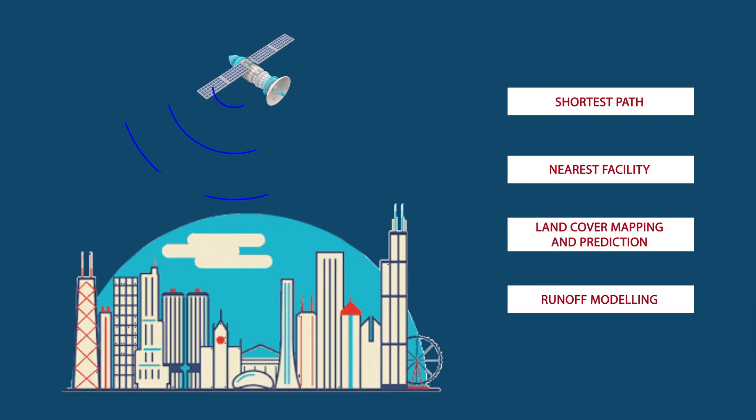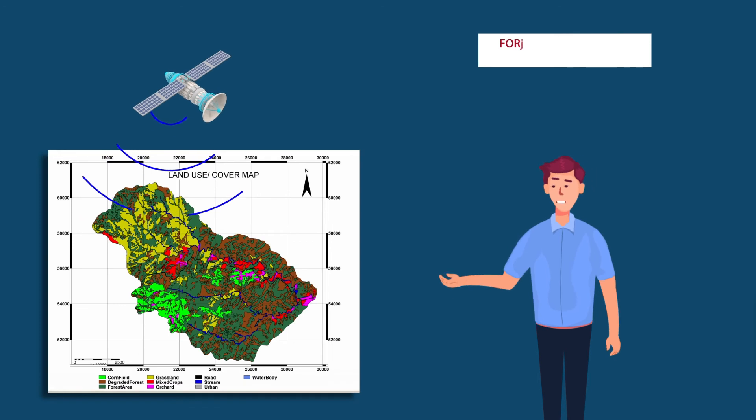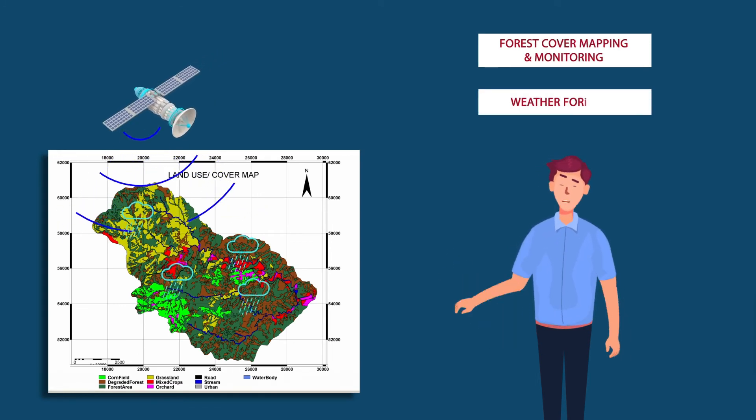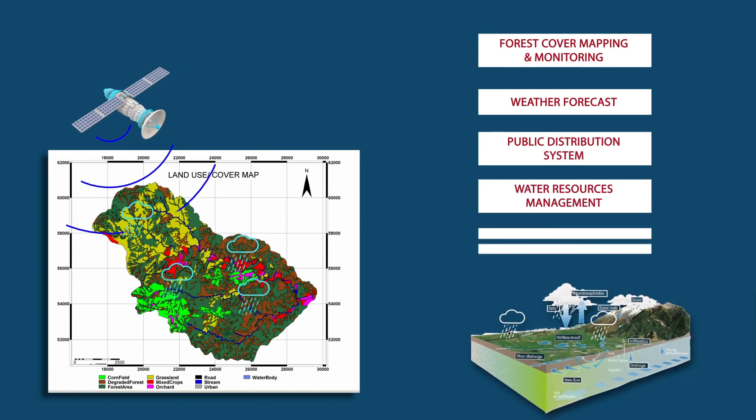Water runoff modeling, and more. GIS has real-life applications in many fields like forest cover mapping and monitoring, weather forecasting, public distribution systems, water resources management, and agriculture mapping.